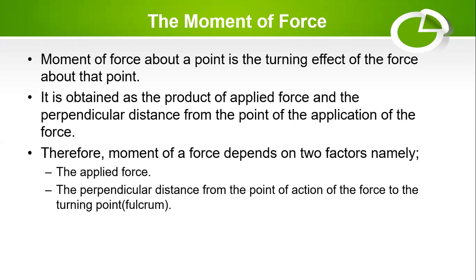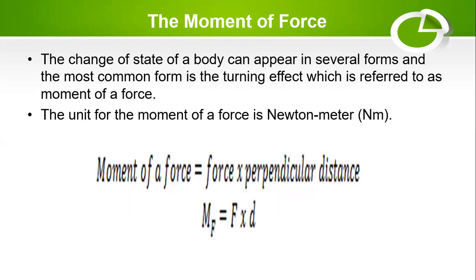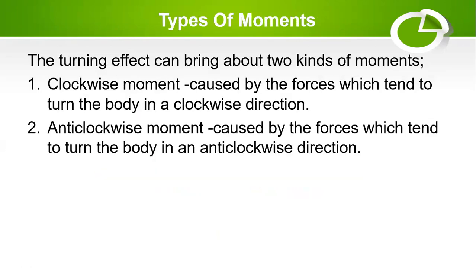The change of state of a body can appear in several forms, and the most common form is the turning effect, which is referred to as the moment of force. The unit of moment of force is the Newton meter. Mathematically, moment of force equals force multiplied by perpendicular distance — that is, M = F × d.